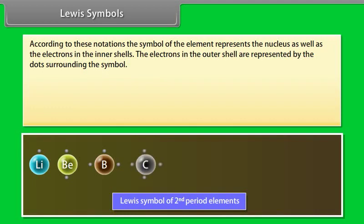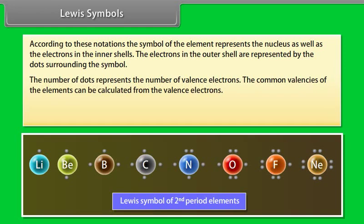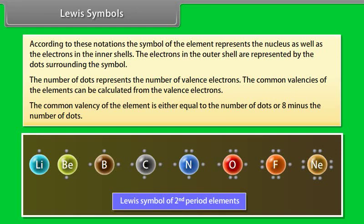Lewis symbols: According to these notations, the symbol of the element represents the nucleus as well as the electrons in the inner shells. The electrons in the outer shell are represented by dots surrounding the symbol. The number of dots represents the number of valency electrons. The common valency of the element is either equal to the number of dots or 8 minus the number of dots. For example, the common valencies of lithium, beryllium, boron, and carbon are 1, 2, 3, and 4 respectively.